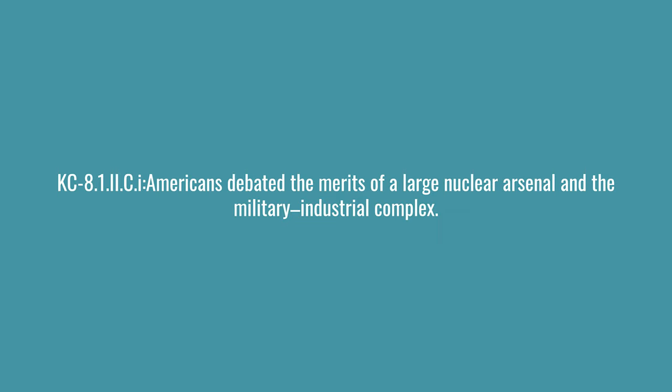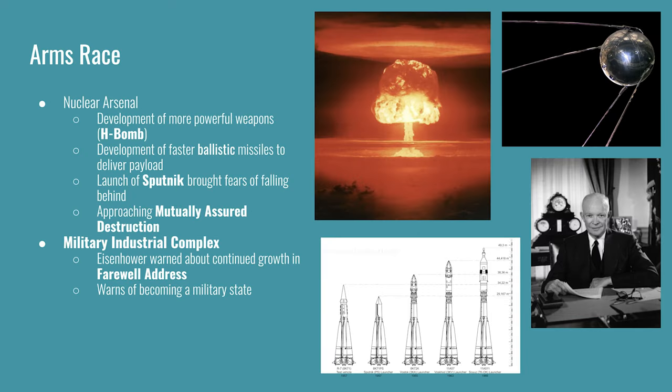Americans debated the merits of a large nuclear arsenal and the military-industrial complex. The nuclear arsenal of the United States grew in size and power since the use of atomic bombs on Japan in World War II. The H-bomb was developed by the United States and was nearly 1,000 times more destructive than the bombs dropped on Hiroshima and Nagasaki. Those had an explosion power of 15 kilotons, while the first hydrogen bomb in 1952 measured 10,400 kilotons, and one test just two years later reached 15,000 kilotons.